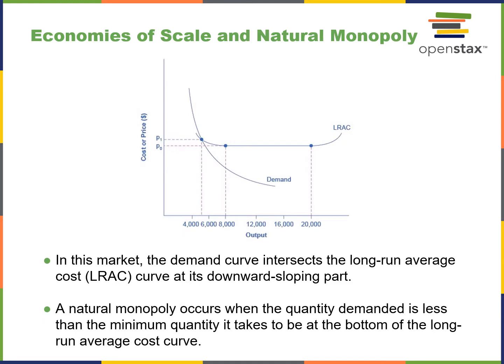Regarding economies of scale and natural monopoly, in this market the demand curve intersects the long-run average cost curve at a downward-sloping spot, with price one and price two corresponding to different output levels. A natural monopoly occurs when the quantity demanded is less than the minimum quantity needed to reach the bottom of the long-run average cost curve.